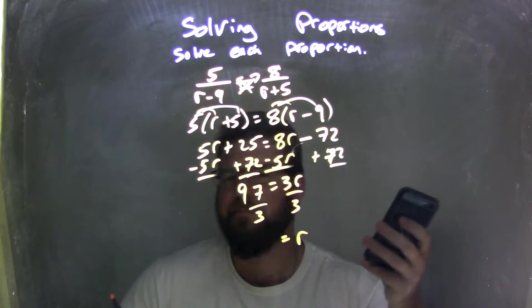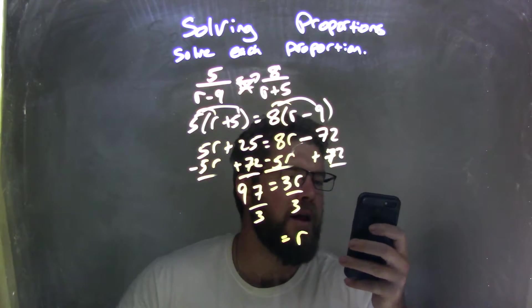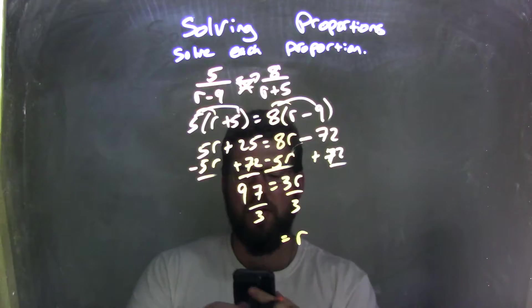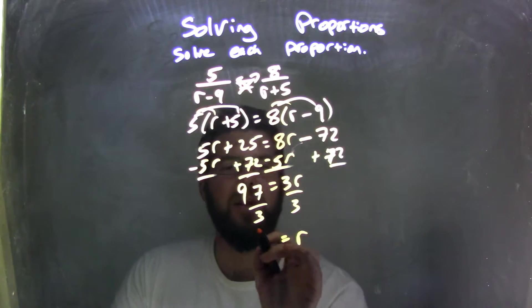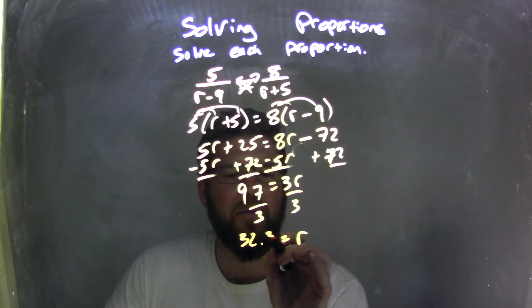I just dropped my marker, but it happens. 97 divided by 3 comes out to be 32.3 repeating. So 32.3 repeating.